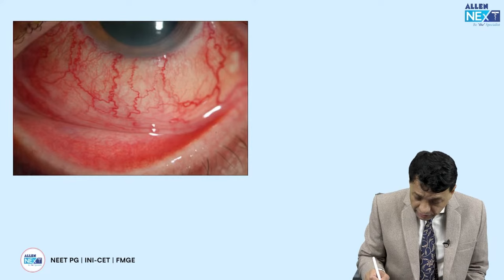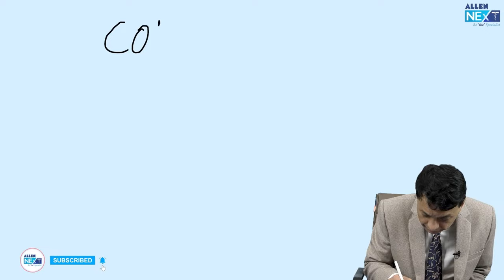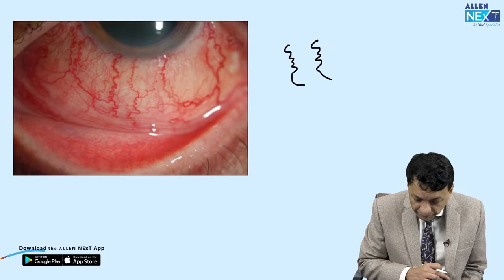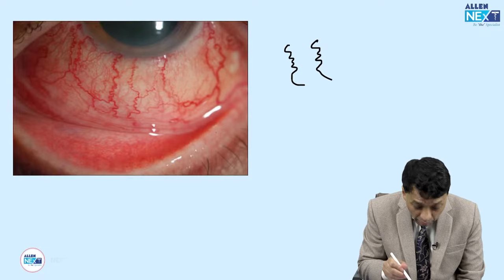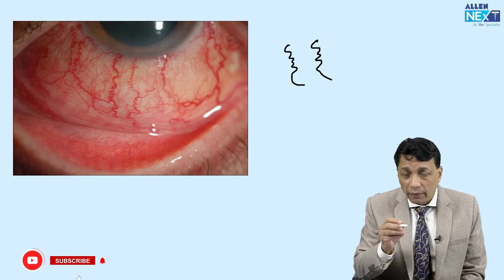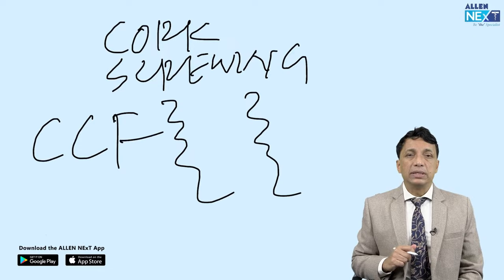Here is a more difficult question. Look at these conjunctival vessels — they are like this, what we call typical corkscrewing of conjunctival vessels. This is called corkscrewing of conjunctival vessels, where they become irregular. Remember this typical engorged vessel — the conjunctiva is red because of the engorged vessels. Typically this corkscrewing is seen in a carotid cavernous fistula, CCF.